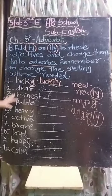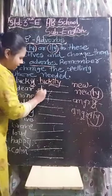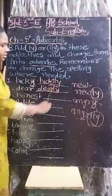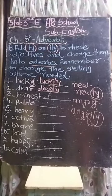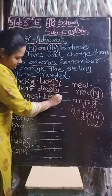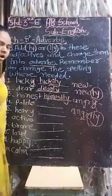Now, 'dare' — D-E-A-R — here we just add L-Y, so D-E-A-R-L-Y, 'dearly'. Then third one, 'honest' — we add L-Y: H-O-N-E-S-T-L-Y, 'honestly'.